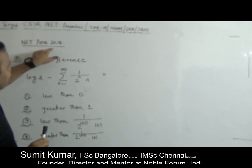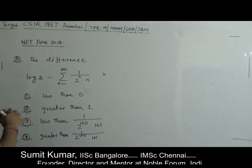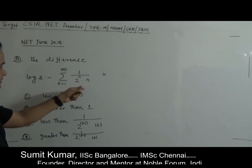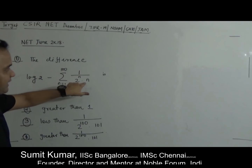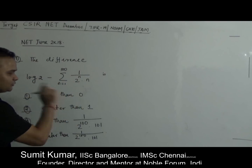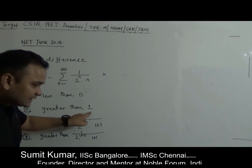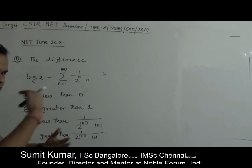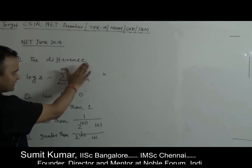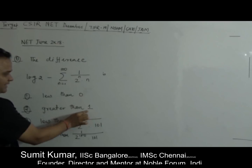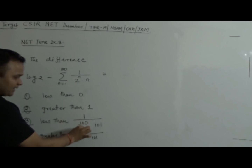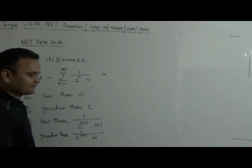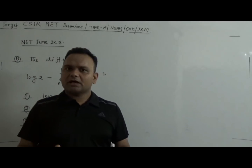So this is the question asked in CSIR NET June 2018. The question is: what is the difference between log 2 and the nth partial sum, n from 1 to 100, of 1 divided by 2^n times n? The options are: this difference is less than 0; greater than 0; less than 1 divided by (2^100 times 101); or greater than 1 divided by (2^100 times 101).